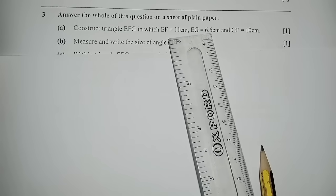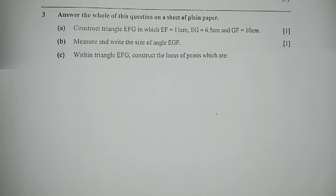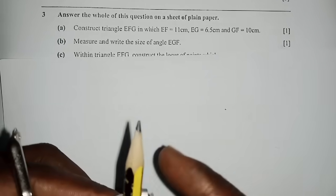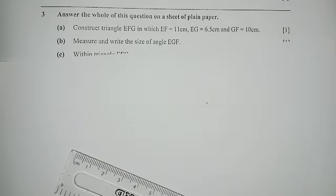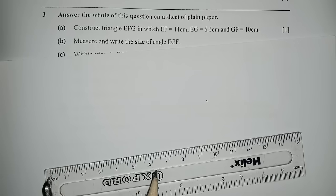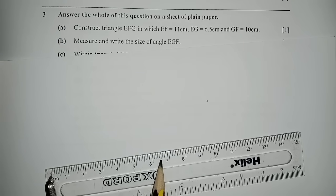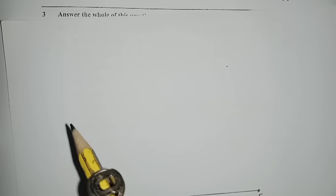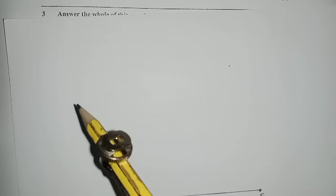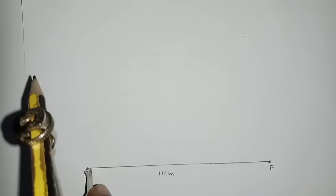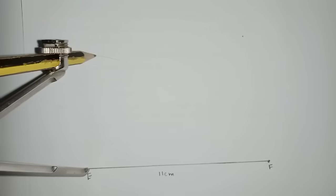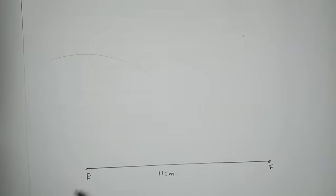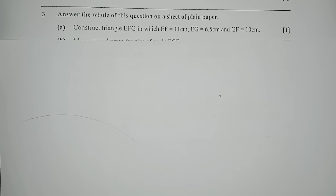The next thing is EG which is 6.5 centimeters. Since you have not been given the angle, you need a compass. Set your pencil nicely and measure 6.5 — open your compass from 0 to 6.5. It's saying EG, so you go to point E and bisect an arc like that — that's the 6.5 arc.